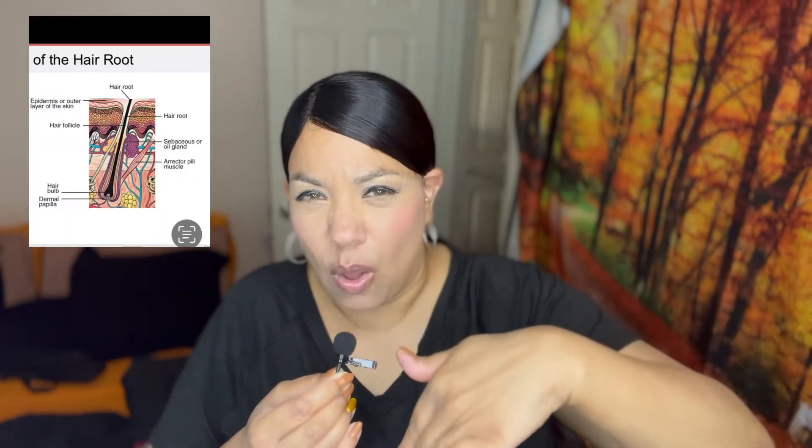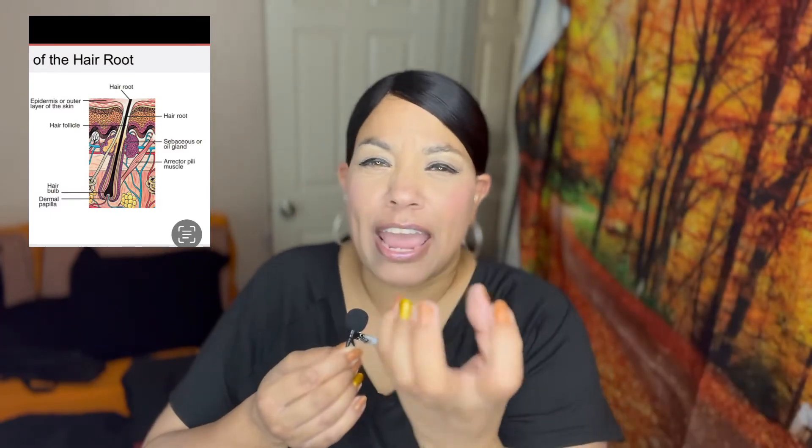The first portion of the hair root we're going to talk about is the hair follicle, which is a deep pocket that pushes down in the skin without puncturing it. It pushes all the way down and encases the hair root, which is where the hair is shooting up out of the hair follicle. We have hair follicles all over our body except on the palms of our hands and the soles of our feet — just imagine if we had to shave those areas.